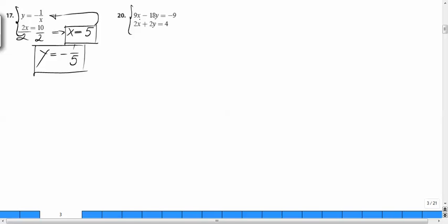Second one. First equation here, 9x minus 18y equals negative 9. How about dividing everything by 9? So this equation becomes x minus 2y equals negative 1.